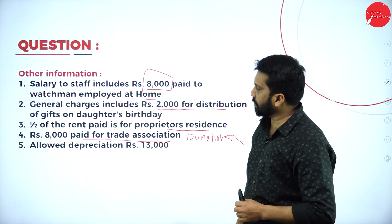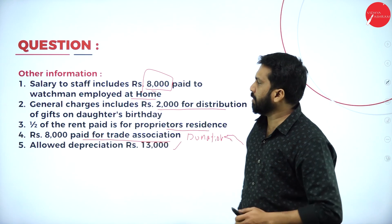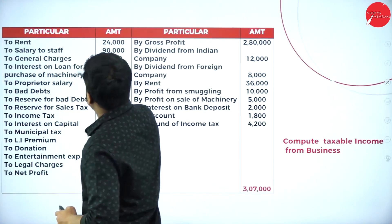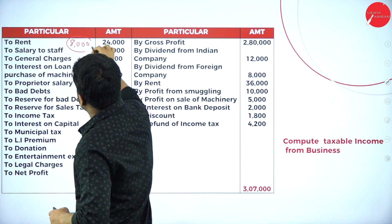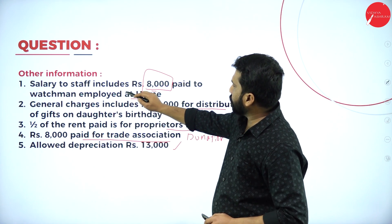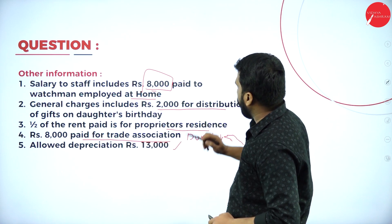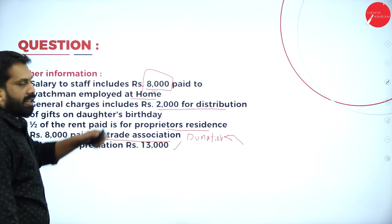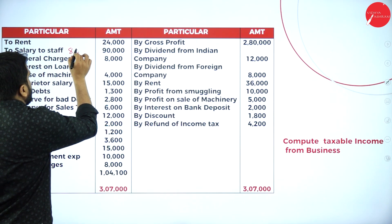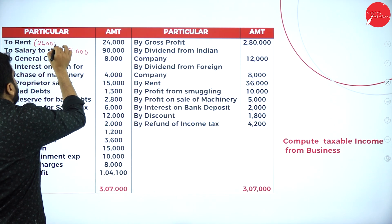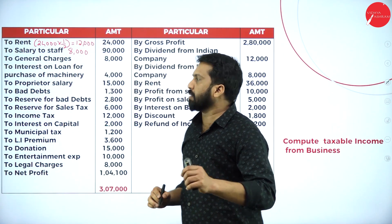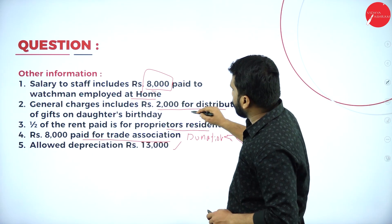Out of the donation of ₹15,000, ₹8,000 is for a trade association which is business-related, and the remaining ₹7,000 is personal — so we take ₹7,000. Allowed depreciation as per income tax is ₹13,000. Rent is ₹24,000 total; out of that ₹8,000 is for personal use, so we should consider only ₹12,000 — that is ₹24,000 multiplied by one-half equals ₹12,000.